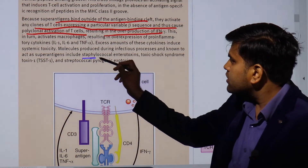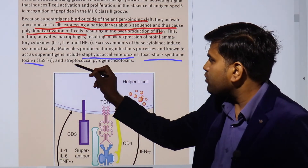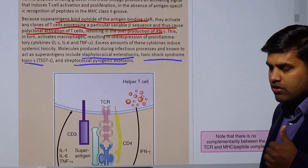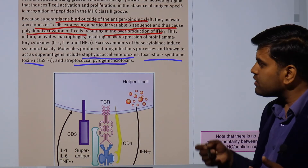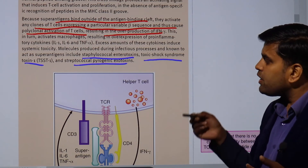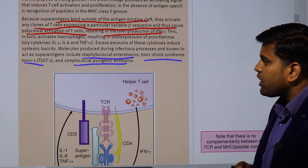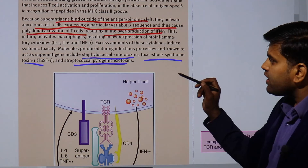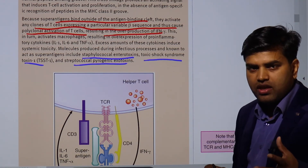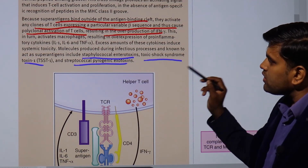Molecules produced during infectious processes and known to be active superantigens include staphylococcal enterotoxin, which causes gastroenteritis; staphylococcal toxic shock syndrome toxin, which causes toxic shock syndrome; and streptococcal pyogenic exotoxin, which is responsible for scarlet fever.